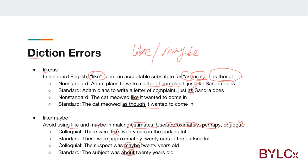In some suspicious cases, we can use 'like' or 'maybe' in non-standard English, but the appropriate standard forms are 'as if' or 'about' to estimate a number or describe the subject approximately.